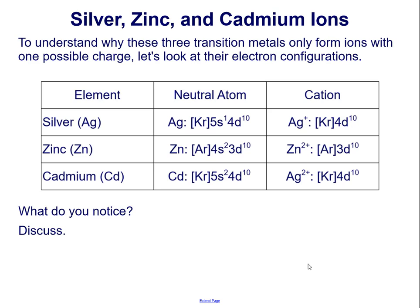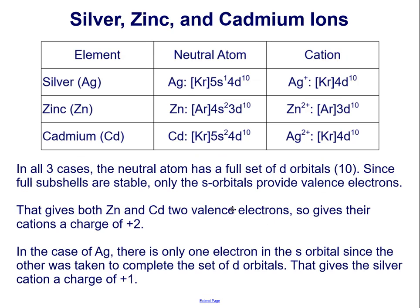To understand why these three transition metals — silver, zinc, and cadmium — only form ions with one possible charge, let's look at their electron configurations. Take a moment and pause this recording before proceeding to see the next slide. In all three cases, the neutral atom has a full set of d orbitals — that's 10 d electrons — d10, d10, d10.